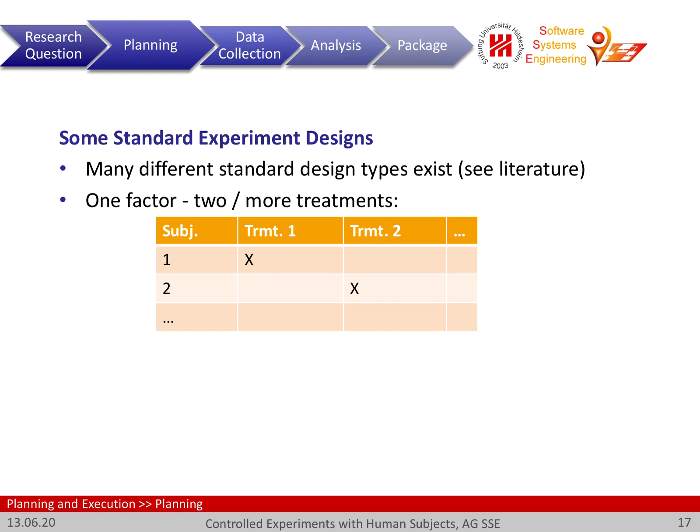Going back to an earlier example where we want to introduce a method for achieving higher productivity: the factor would be the application of this method, and the two different treatments would be — there would only be two — I use the method, or I do not use the method. For each of the subjects in the experiment, we assign whether they receive treatment one (use the method) or treatment two (do not use the method).